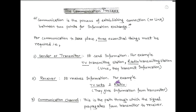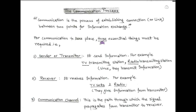The receiver receives information — for example, TV sets and radio sets — and they receive the information that is transmitted by the transmitter. Between a transmitter and receiver there is a communication channel. The communication channel is a path through which the signal propagates from transmitter to receiver. This channel may be wired or wireless. In case of wire, it is called a line channel, and in case of wireless, it is called a radio channel.